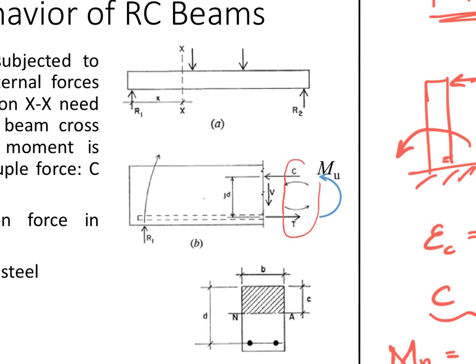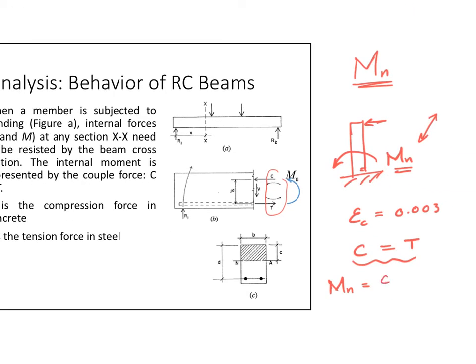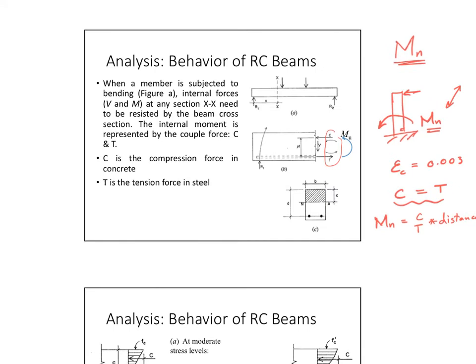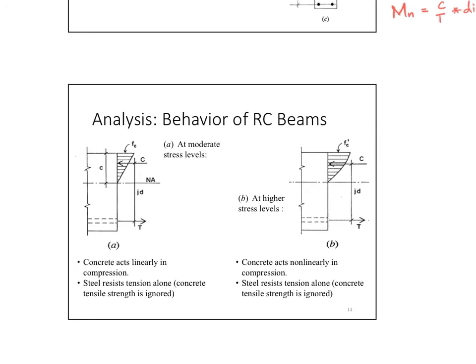C is the compression force in concrete; T is the tension force in steel. Together these two forces form a couple whose moment is what resists the applied moment. To understand where C and T come from, let's load a beam gradually from zero all the way to failure, recalling that the concrete stress-strain curve ends at 0.003 with a maximum stress of f'c.